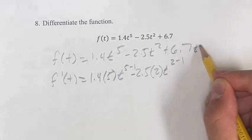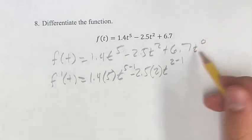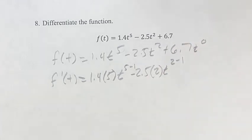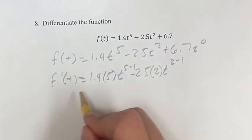This one, it's t to the 0, so bringing it down would be everything multiplying by 0. So you can just think of this as having a derivative of 0, which it does.